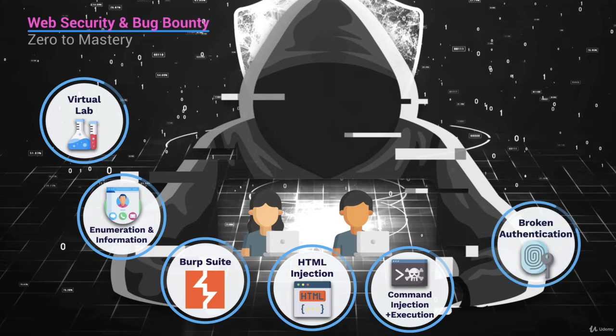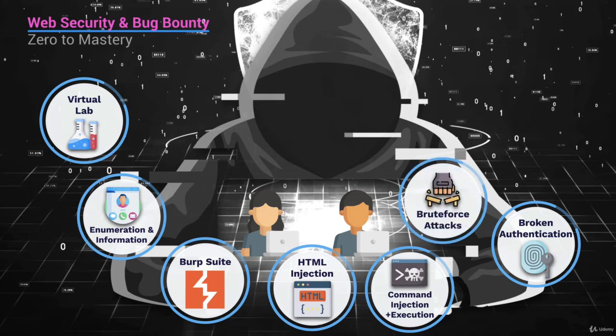We then talk about broken authentication — what happens when authentication on a website is not done properly. We can take advantage of it, and we're going to show you how using different examples like cookie values, HTTP requests, the forgot password page, and a lot more. We then get into brute force attacks. Even if a website is secure, if a simple password is set, it's easy to guess using brute force. We'll show you how brute force attacks work and how to prevent them.